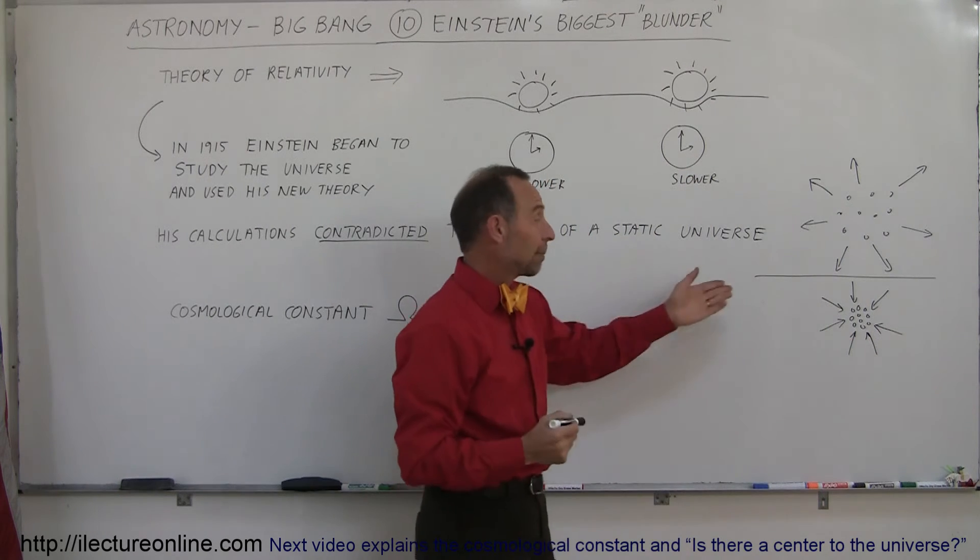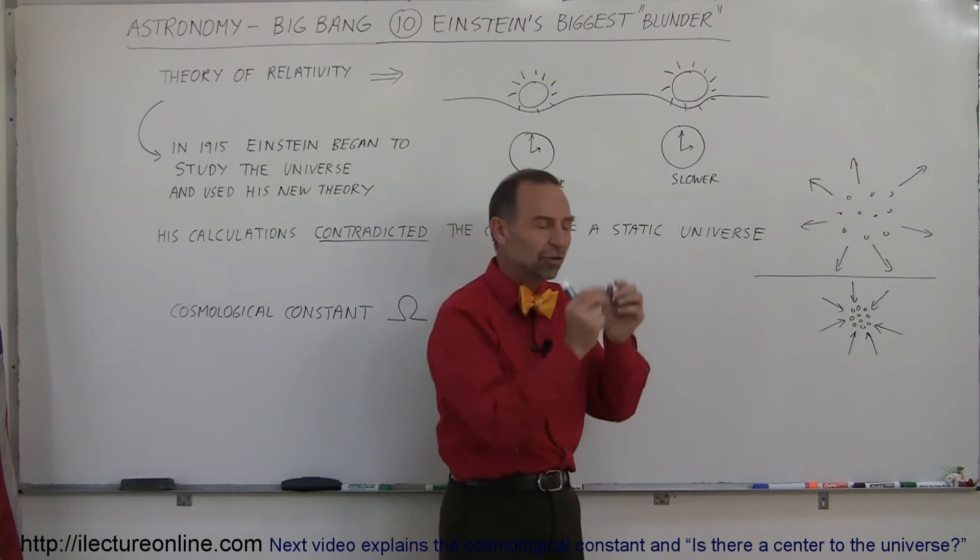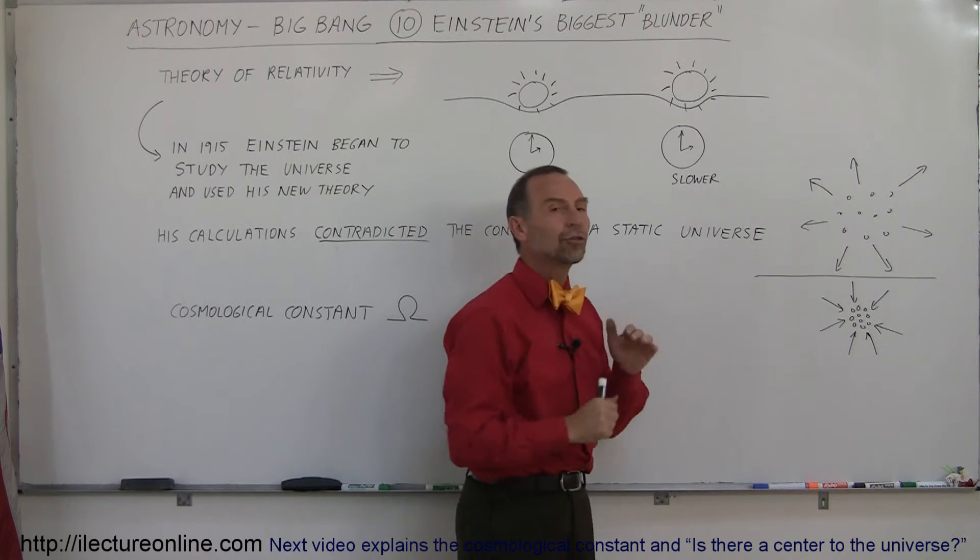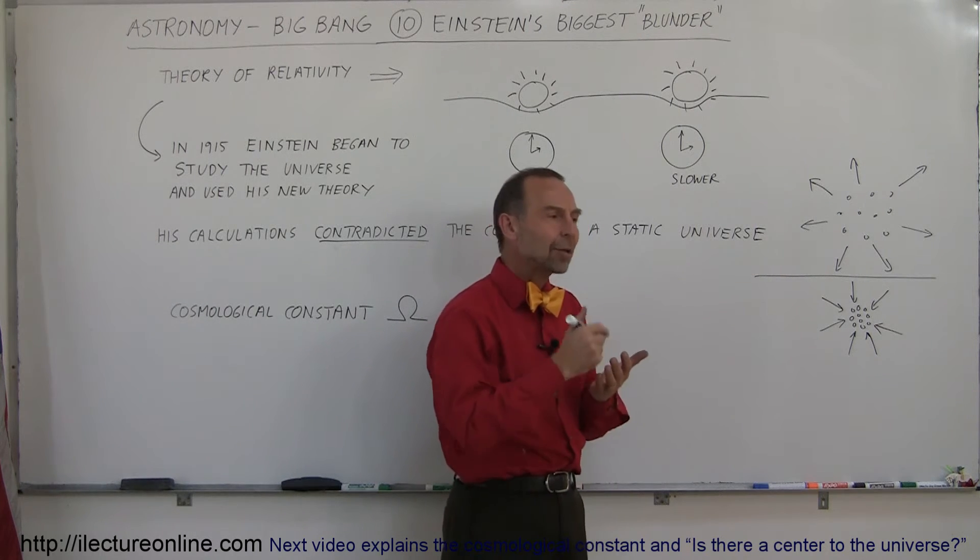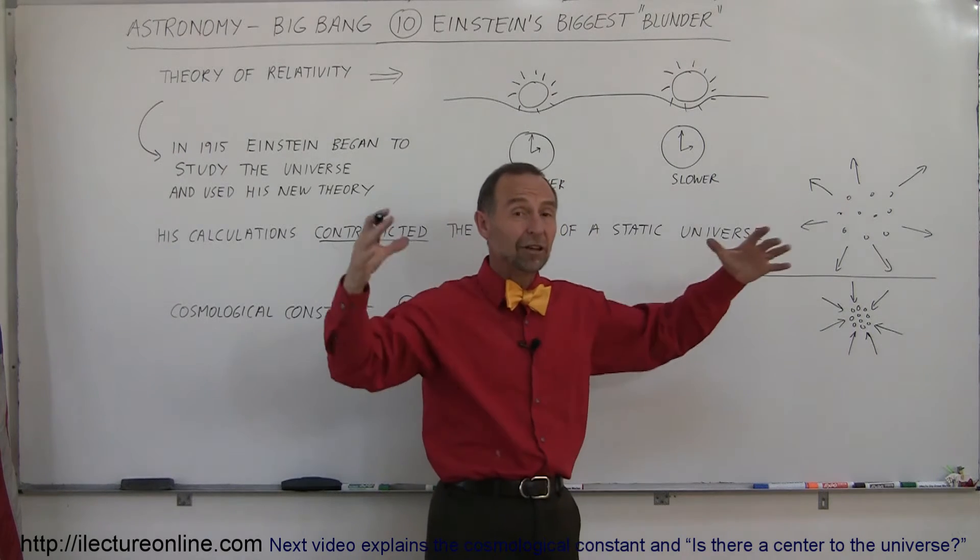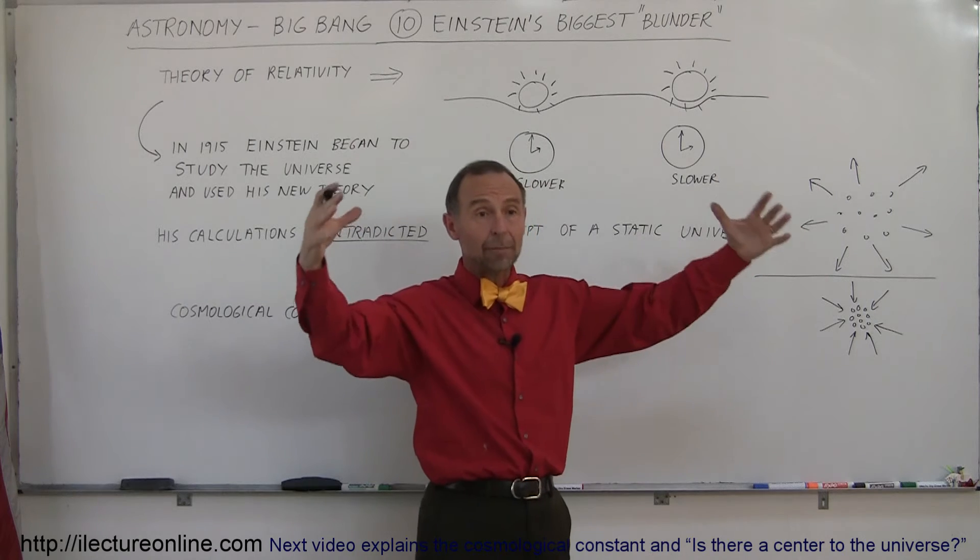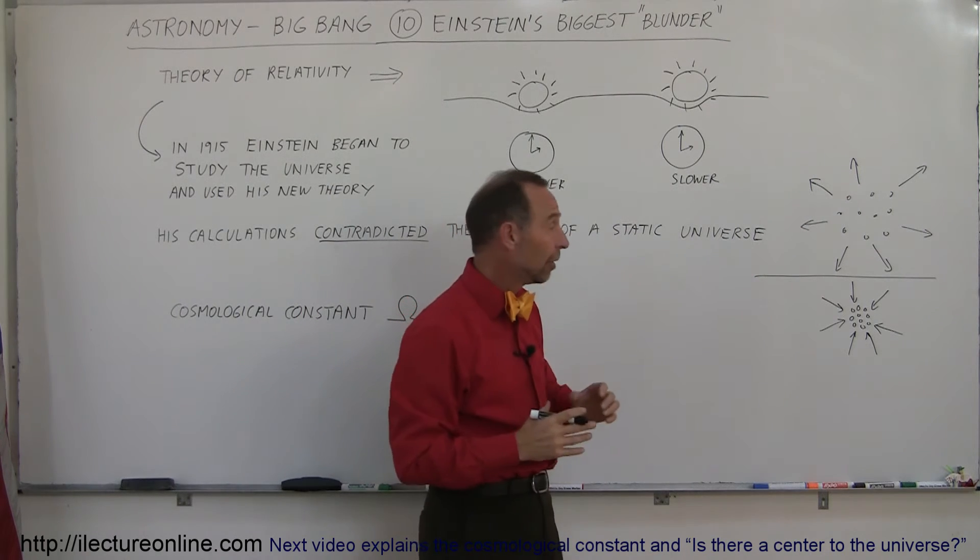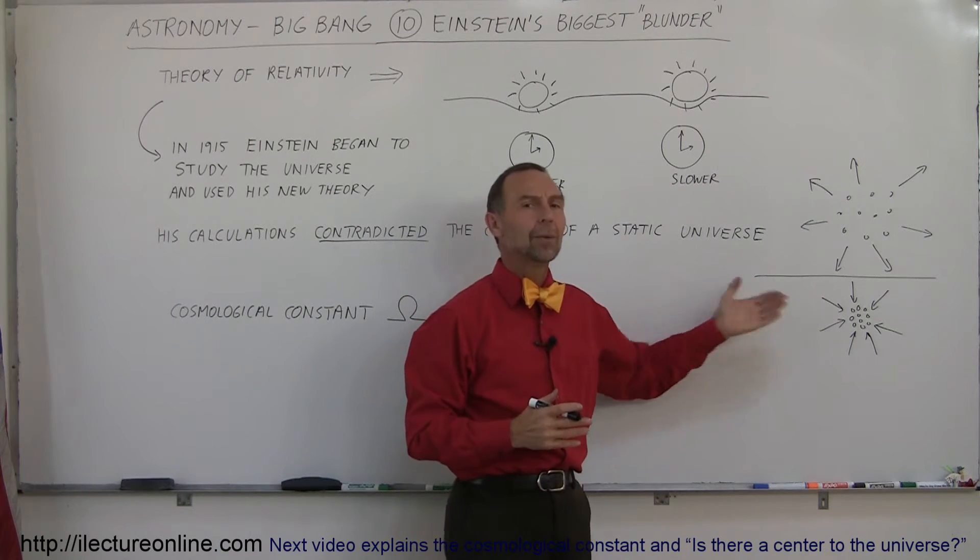And it was mathematically virtually impossible. It would just have to be just perfect for the universe to be static. Matter of fact, when he continued his calculations, he was under the impression that the calculations showed that eventually the universe, if it was expanding, would stop and recontract and imploding on itself or maybe it was already doing that and we didn't know.